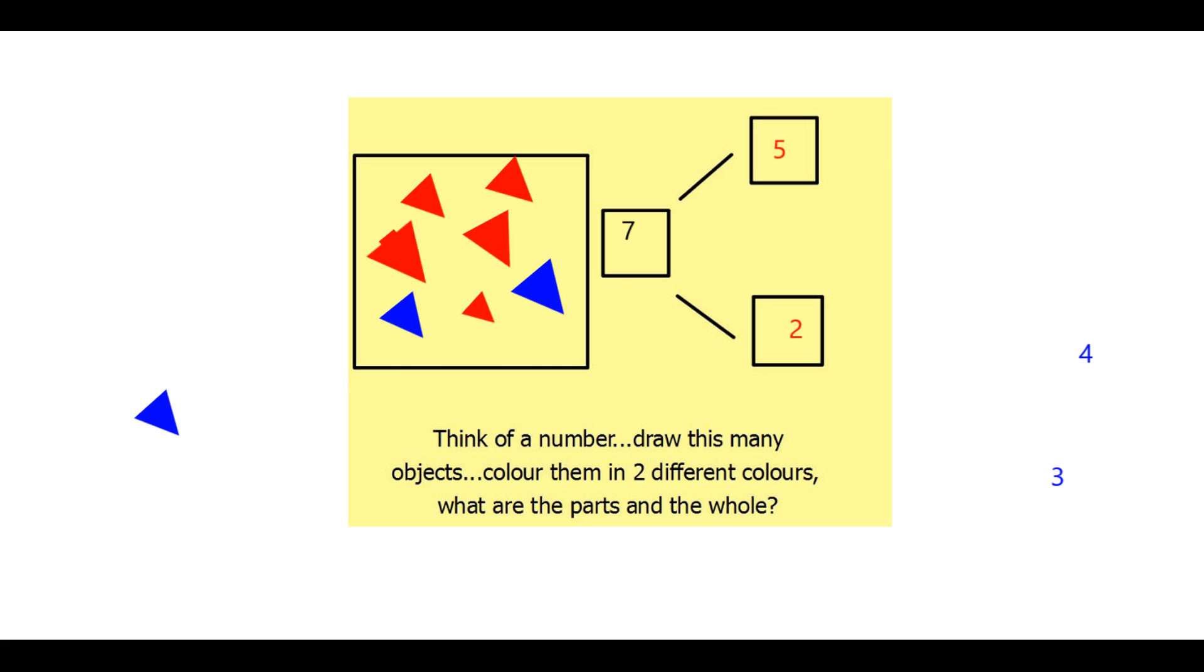So that's the part, part, whole model that we're teaching in class. And it's just about teaching children number bonds and different ways of making a number. Gives them a real good understanding of how each number is made up. So I hope that was useful. And it might be useful to work on that at home whenever the homework comes back home. And just gives you an idea of what we're doing in class. Thank you.